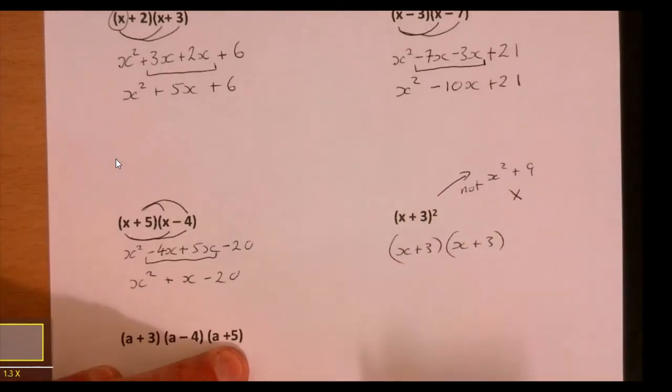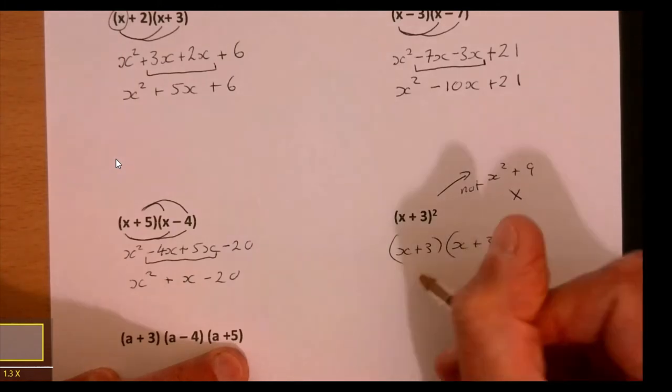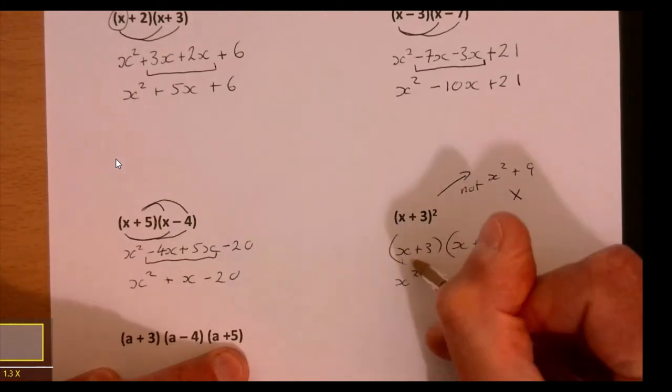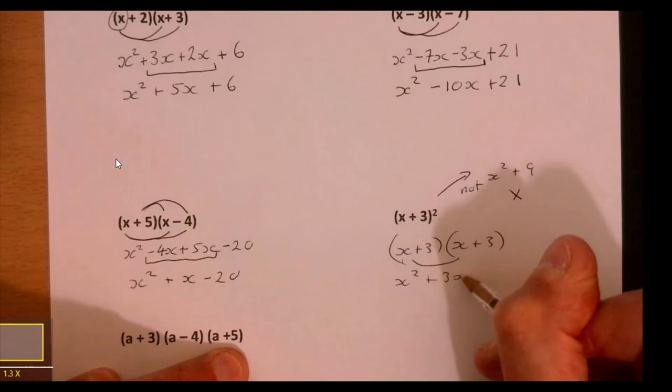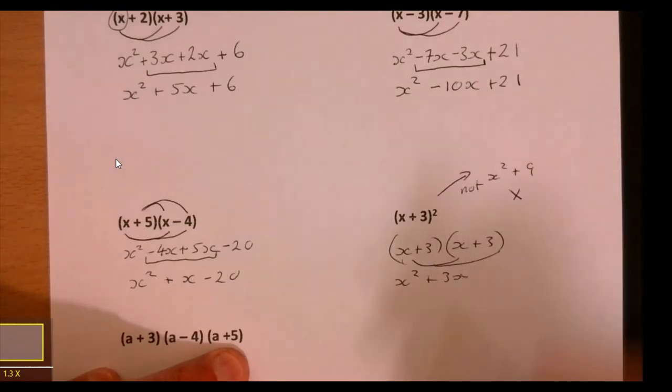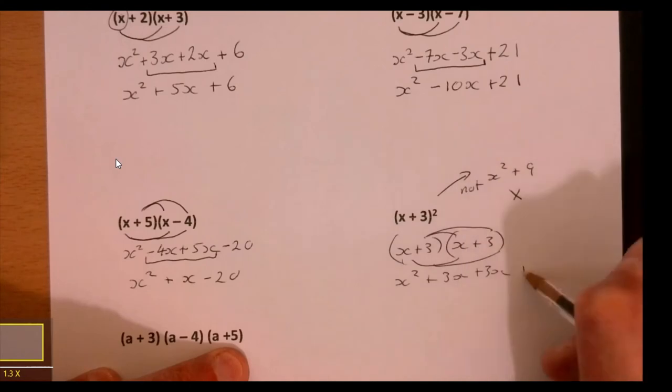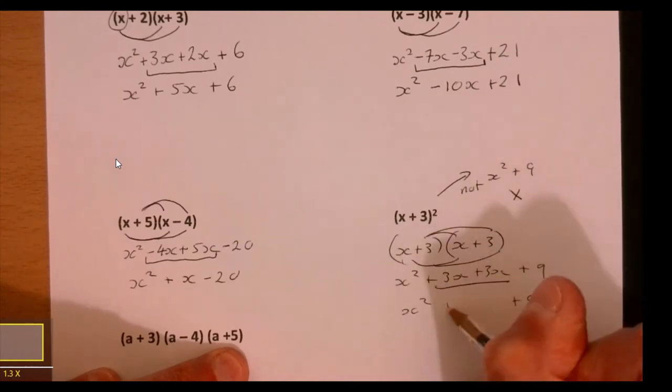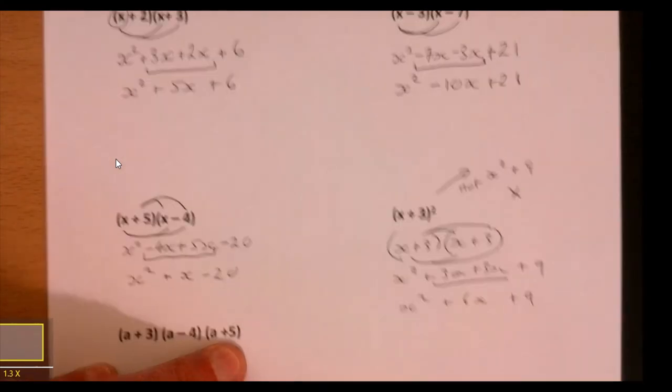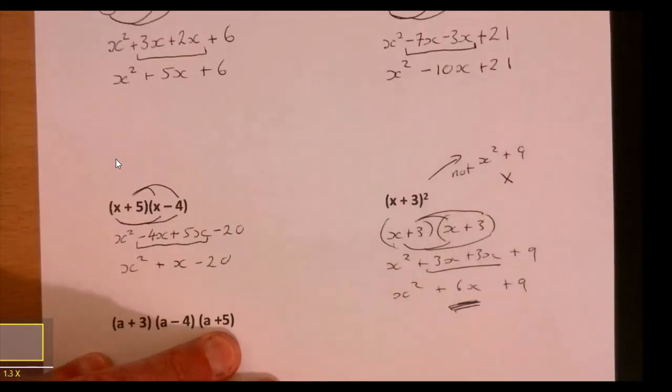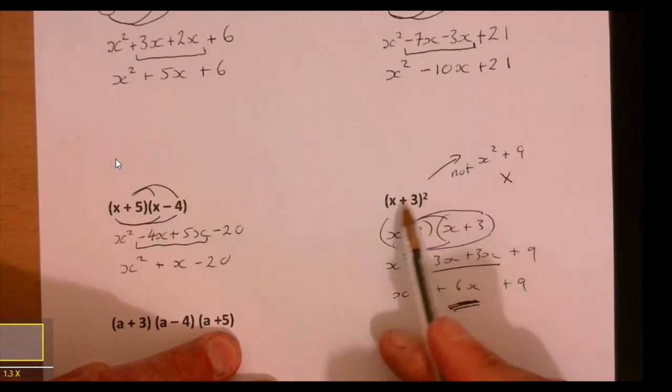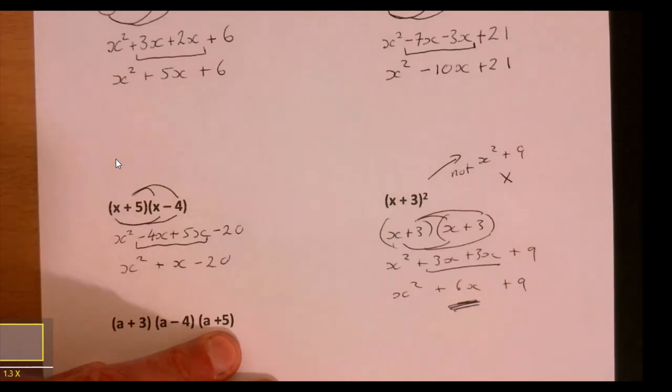So (x+3)² is exactly the same as everything we do: x squared plus 3x plus 3x plus 9. Tidy it up to x squared plus 6x plus 9. A lot of people miss that bit - they just square each term separately. This catches a lot of people out.